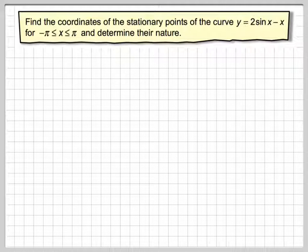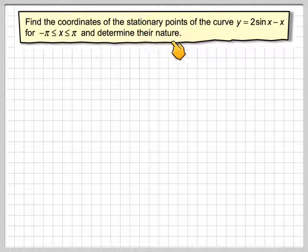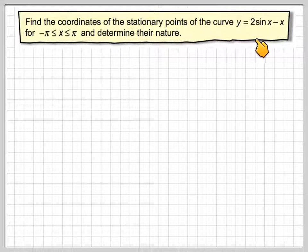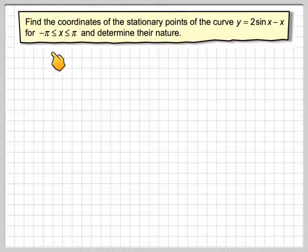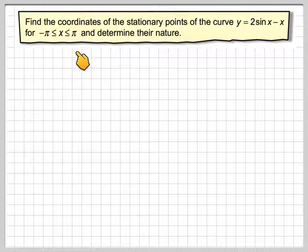Hello again, another video from me. In this one we're going to find the coordinates of the stationary point of the curve y equals 2 sin x minus x, for x being between minus pi and pi, and determine their nature.